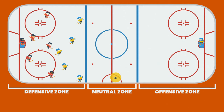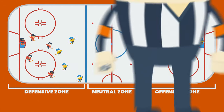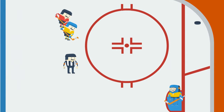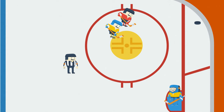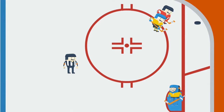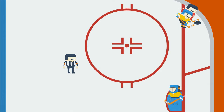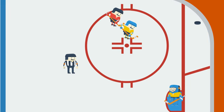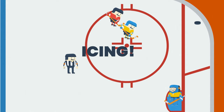In hybrid icing, races to the puck can still happen, but instead of having the players race all the way to the boards, the referee makes the call when they're by the hash marks. If the referee thinks that the offensive team will get to the puck first, play automatically goes on — it doesn't matter who touches the puck first. But if the referee thinks that the defensive team will get to the puck first, play is stopped and icing is called.